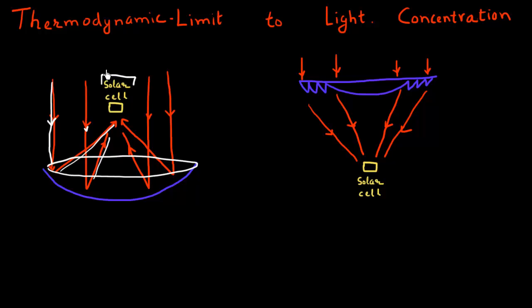Many times these concentrated photovoltaic systems use multi-junction solar cells, which have multiple junctions that achieve higher efficiency for solar conversion.